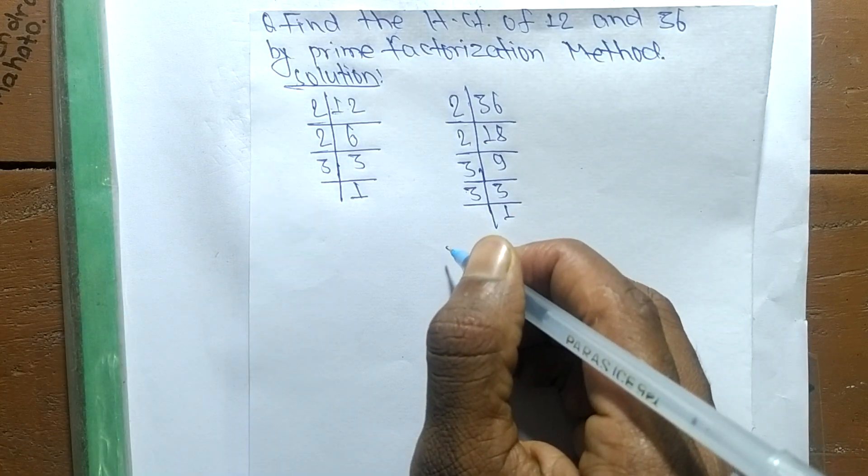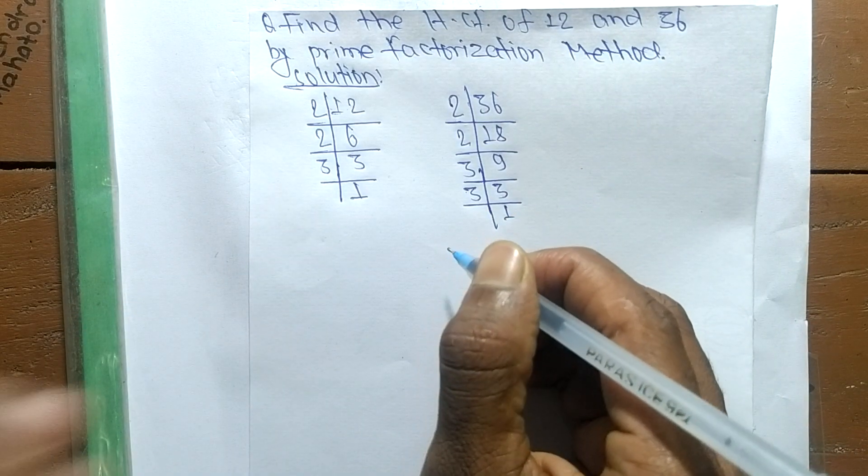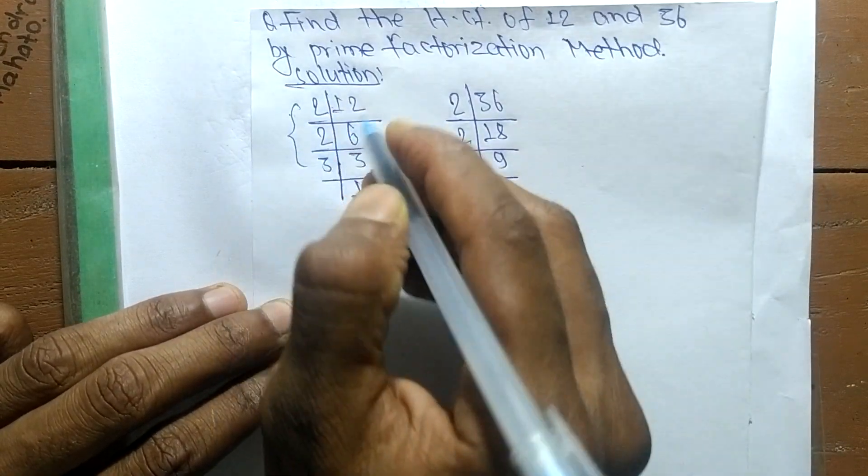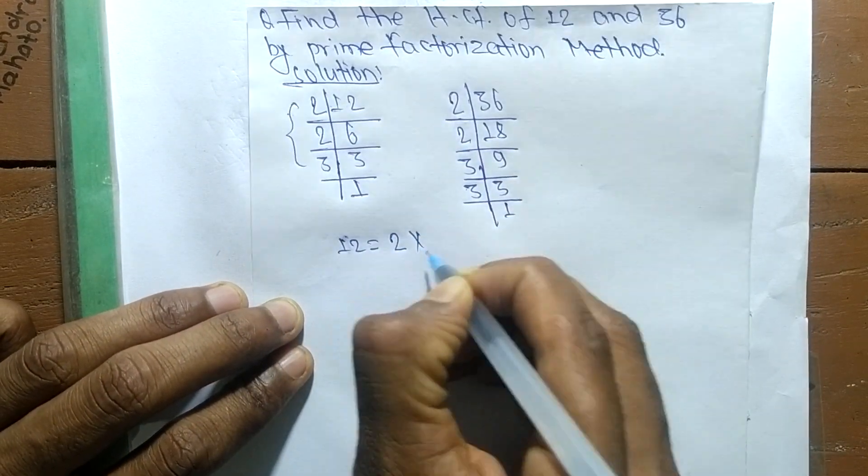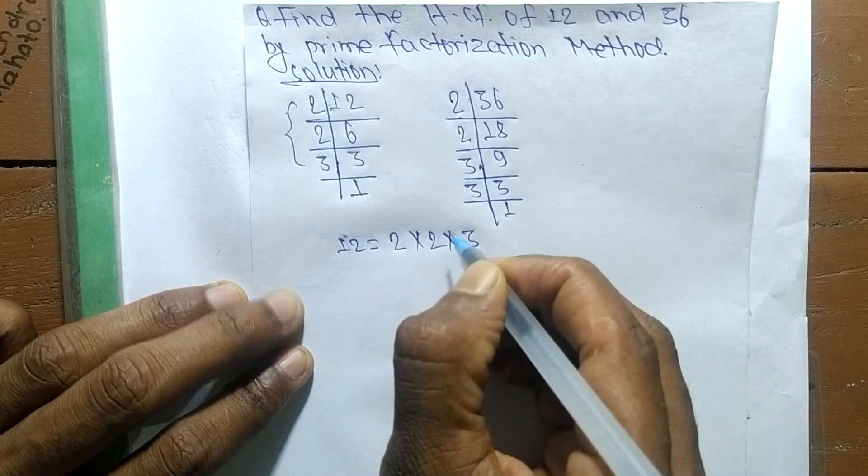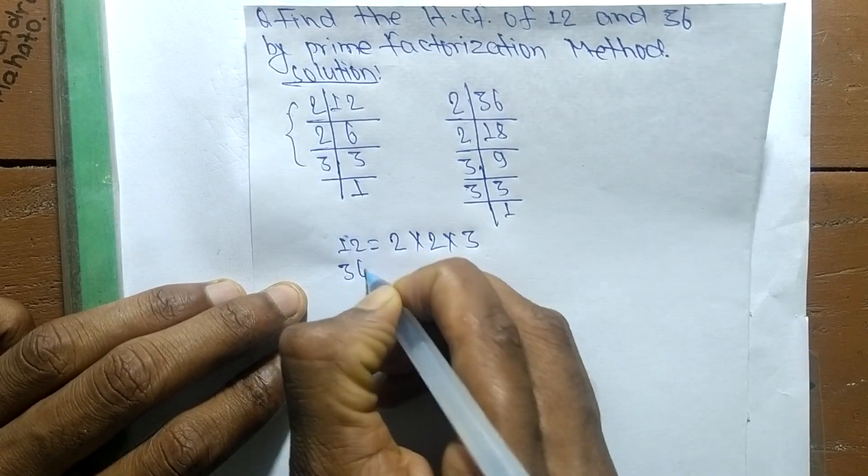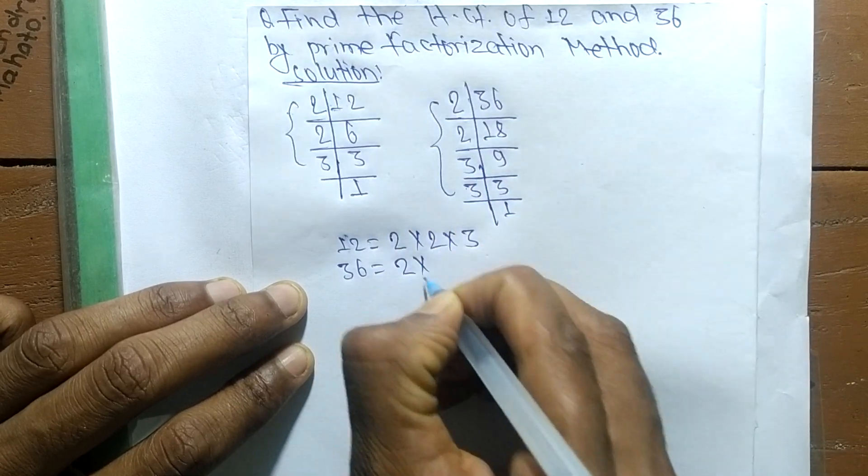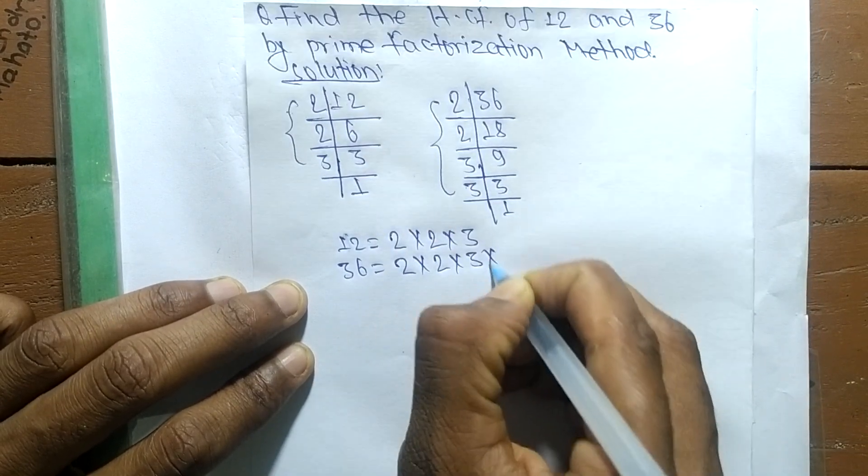From these prime factors we can write: 12 is equal to 2 times 2 times 3. Likewise, 36 is equal to 2 times 2 times 3 times 3.